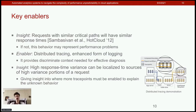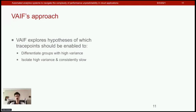Third, high response time variance can be localized to sources of high variance within critical path portions of the request workflow traces. This gives us insight into where more trace points must be enabled to explain unknown behavior further. Building on these critical enablers and insights, we present the design of our framework.